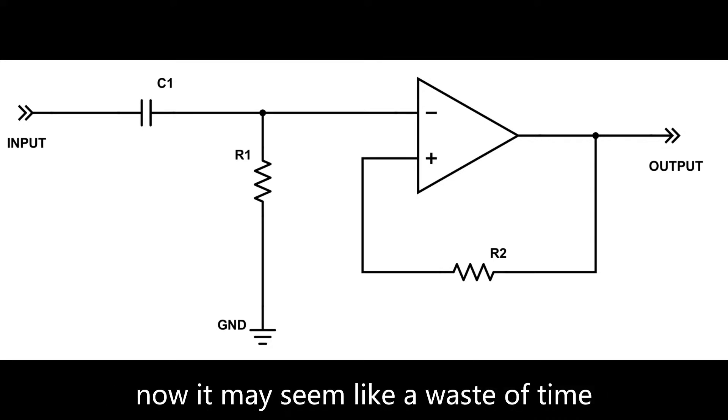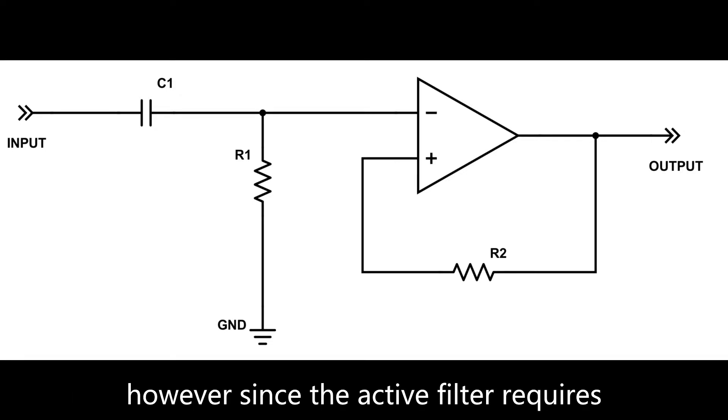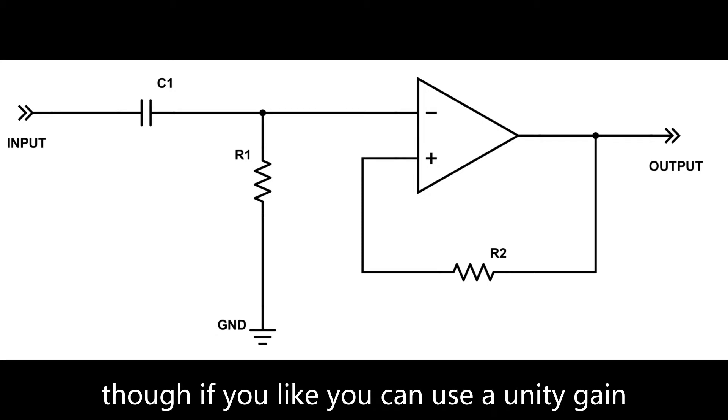Now, it may seem like a waste of time to build an active high pass filter if a passive high pass filter does the same thing. However, since the active filter requires an op-amp on the output, it allows for an increase on the output of the amplifier. Though, if you like, you can use a unity gain system to negate its effect.